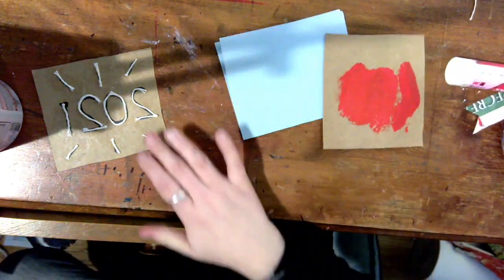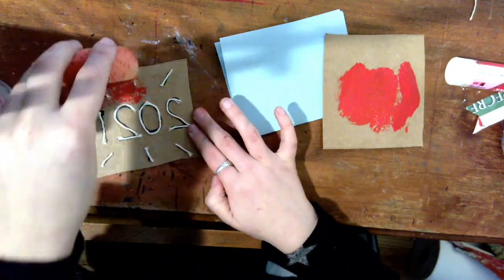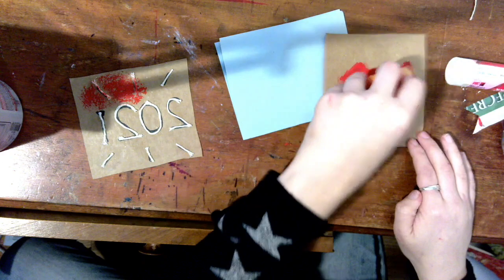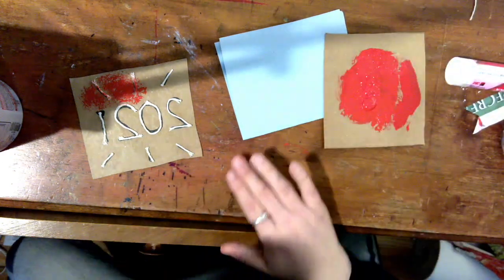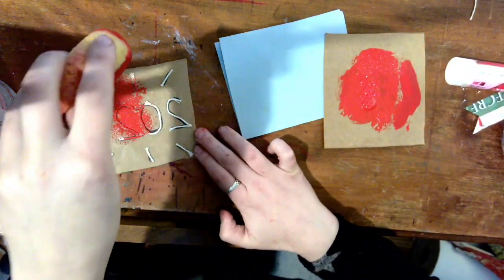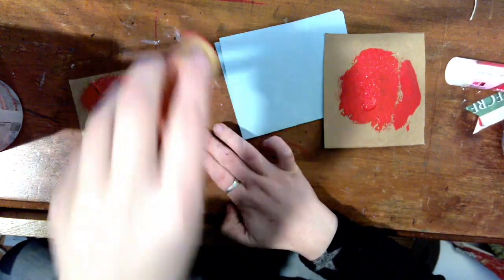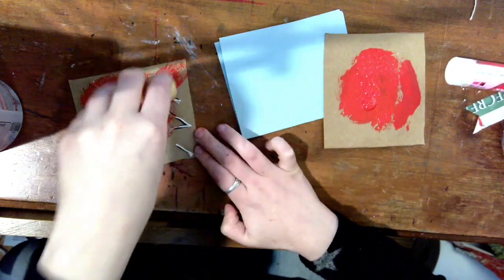I'm going to cover my sponge with it. And then this is important—I'm just going to dab the surface with my sponge covered in the acrylic or whatever liquid paint you are using. So I'm dabbing, dabbing, dabbing, covering the whole surface of what I want to show up on the other side of the paper.